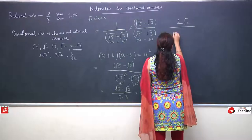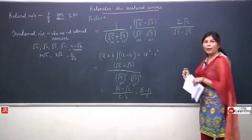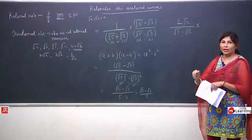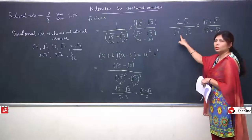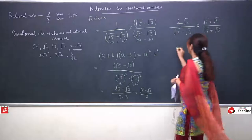Now let us take more examples based on this. I have 2 root 2 upon (root 7 minus root 5). Now I am considering minus. Look at the denominator carefully. See what operation is between them, then take the just opposite sign - here minus becomes plus. Then we rationalize the term.